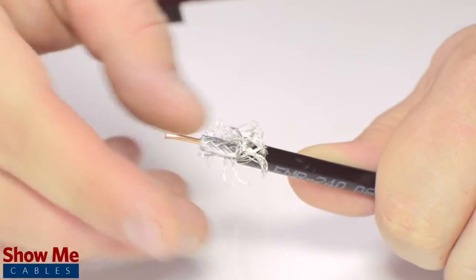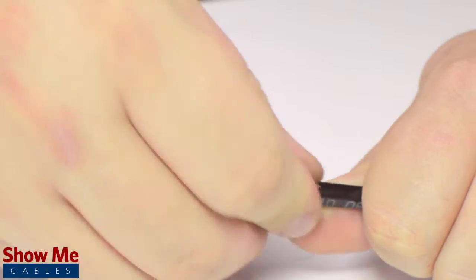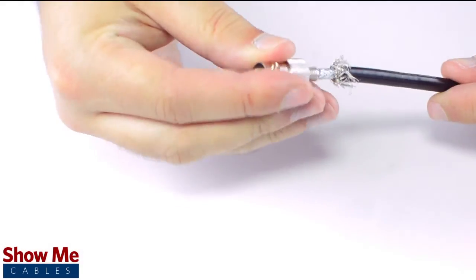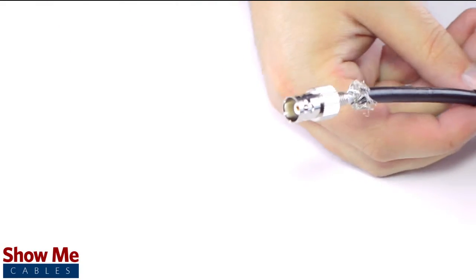Pull back the braided shield and insert the connector onto the cable. Apply pressure and twist to make sure that the center conductor makes contact with the center pin.